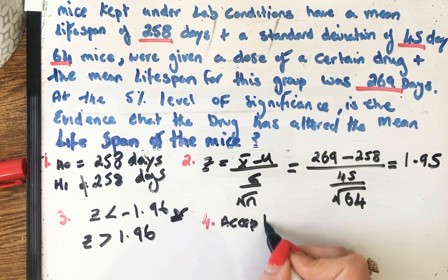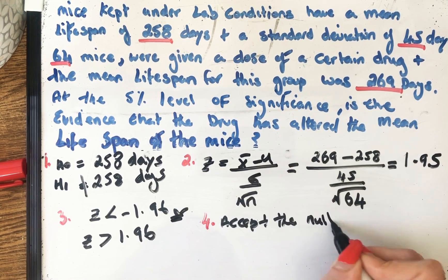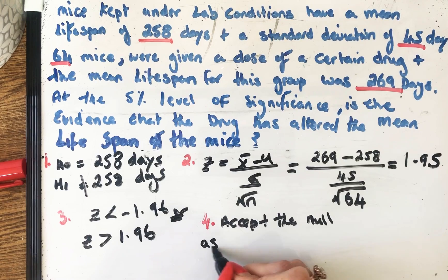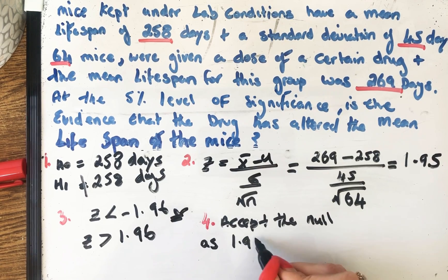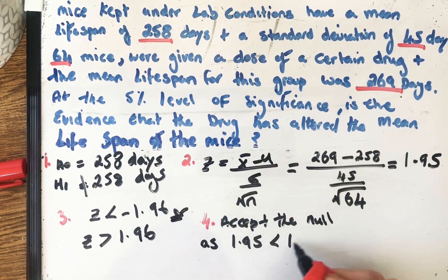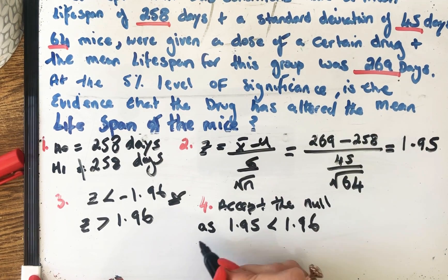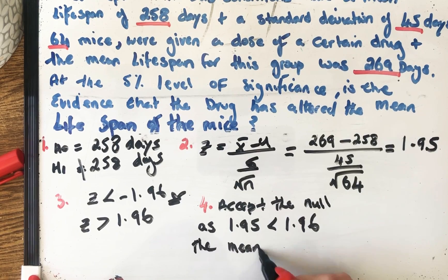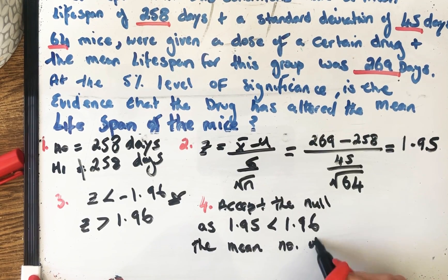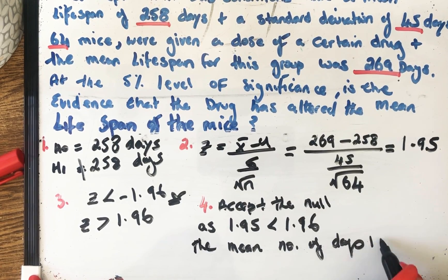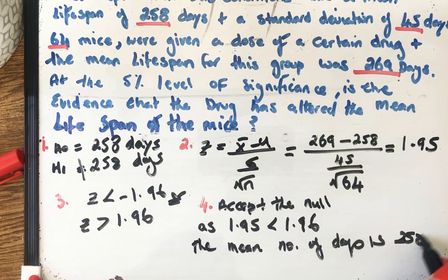Accept the null as 1.95 is less than 1.96. And we'll say that the mean number of days is 258.